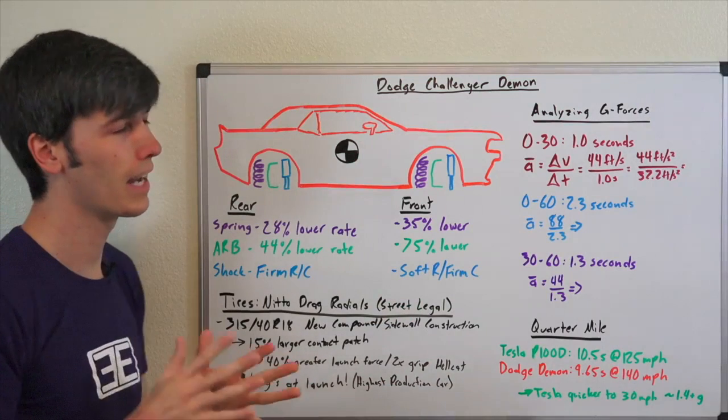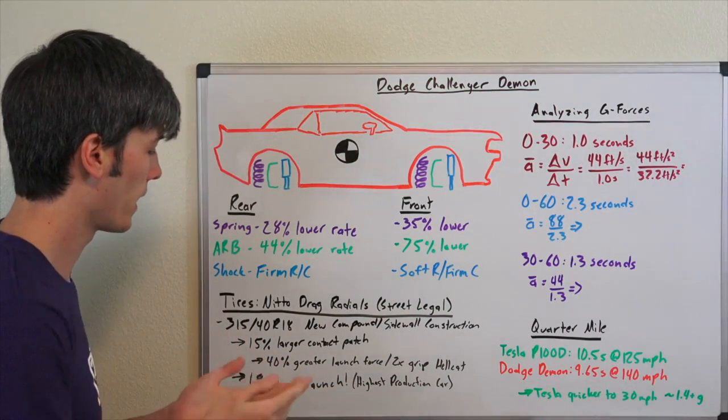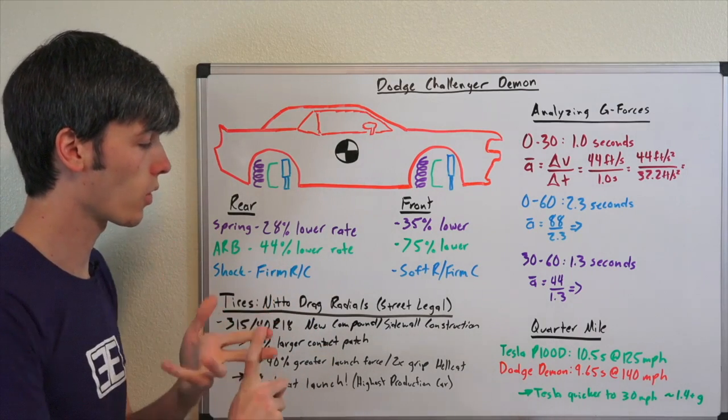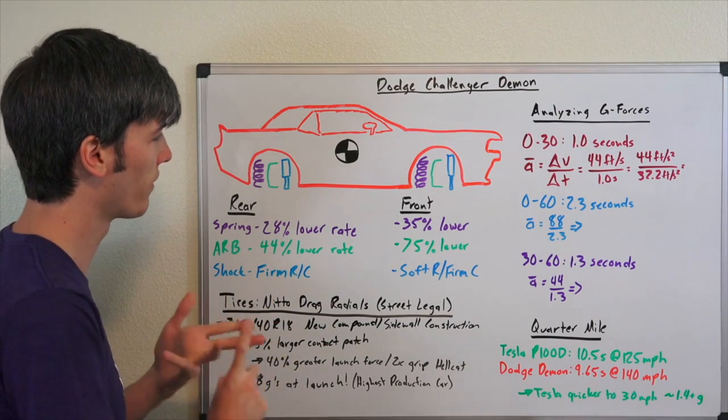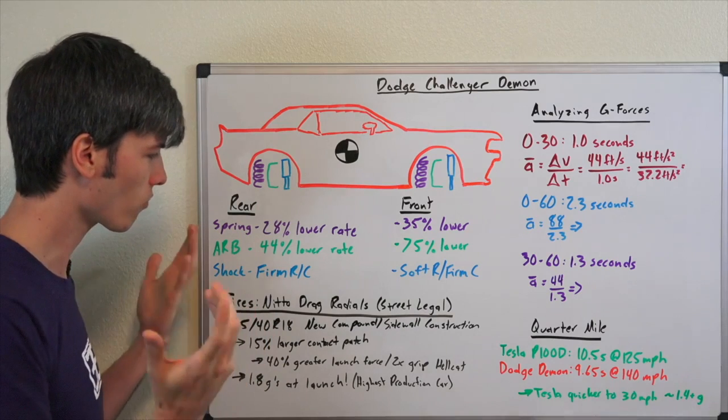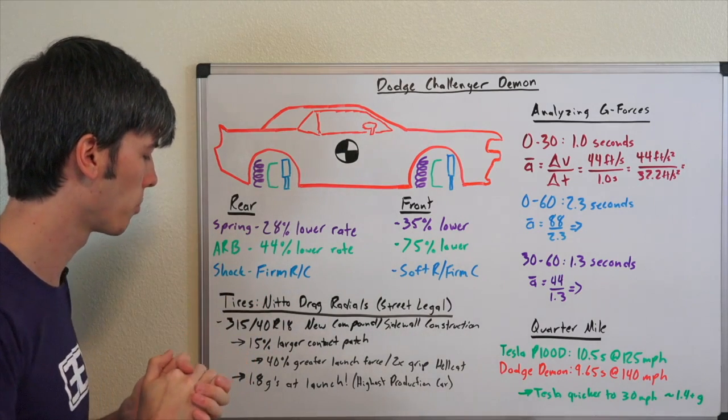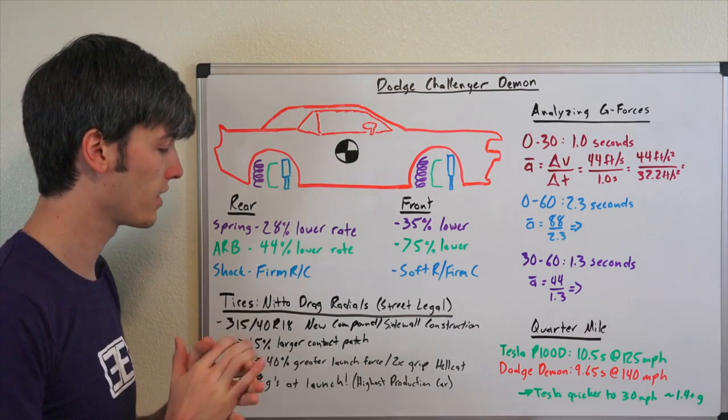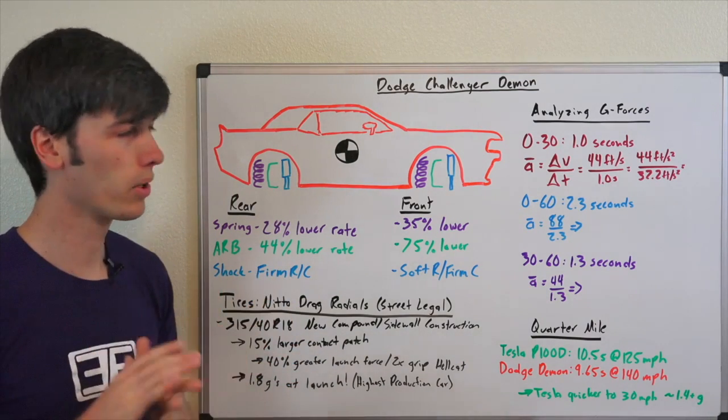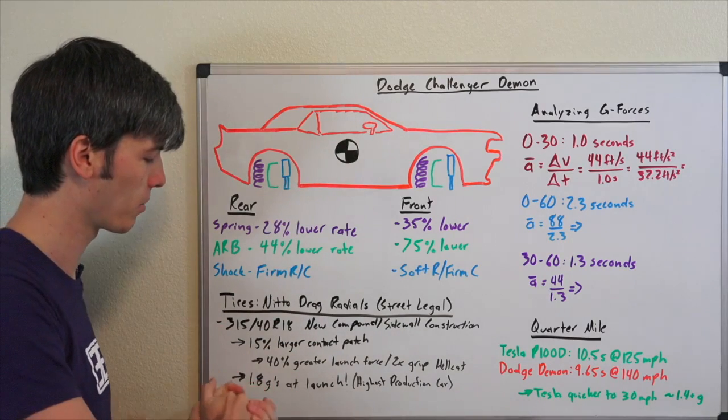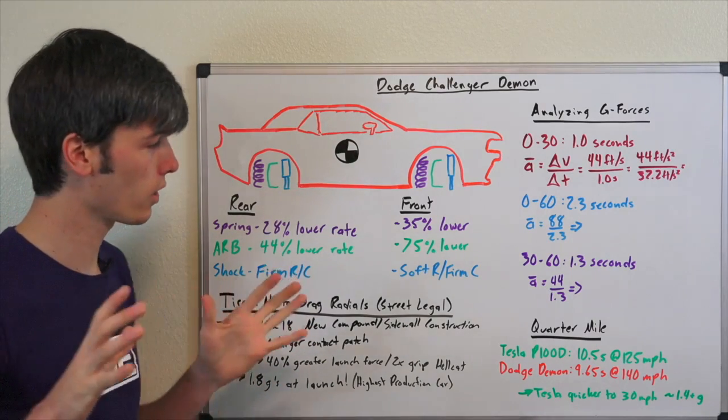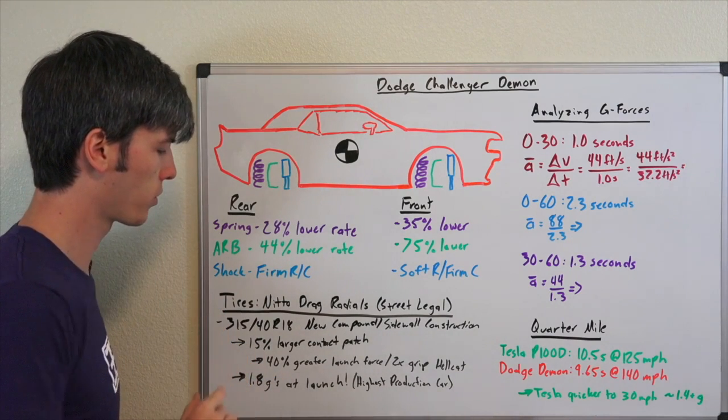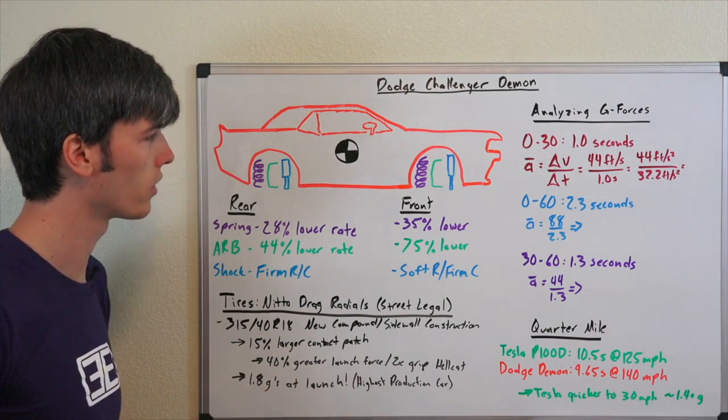Super cool to be able to see that. It's got a 15% larger contact patch versus the Hellcat. It's able to achieve a 40% greater launch force and supposedly has over two times the grip of the Hellcat with these tires. Super sticky drag tires put on there. They are claiming a peak G-force of 1.8 G's at launch, the highest of any production car. Now we're going to talk about why this number, this 1.8 G, sounds stupid impressive, it is stupid impressive, but it's for a very short duration, so I don't think it's all that significant to talk about.